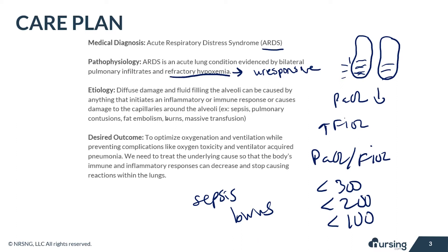Our desired outcome is to optimize oxygenation and ventilation while preventing complications like oxygen toxicity and ventilator-acquired pneumonia. We also need to treat the underlying cause so that the body's immune and inflammatory responses can decrease and stop causing these reactions in the lungs.